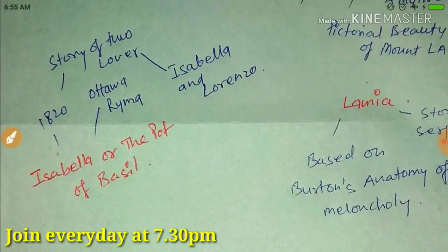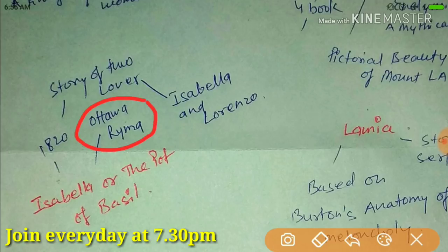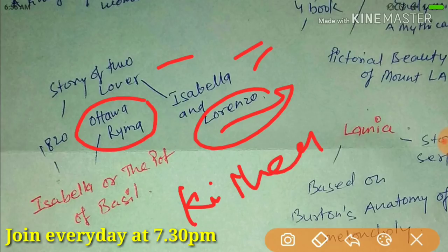Another work is 'Isabella, or the Pot of Basil.' It is a narrative poem composed in 1818 and published in 1820. He used ottava rima in this work. It is the story of love and death — the two lovers are Isabella and Lorenzo. The brother of Isabella kills Lorenzo. Famous lines include: 'Today we purpose, aye, this hour we mount to spur three leagues toward the Apennines. Come down, we pray thee, ere the hot sun count his dewy rosary on the eglantine.'